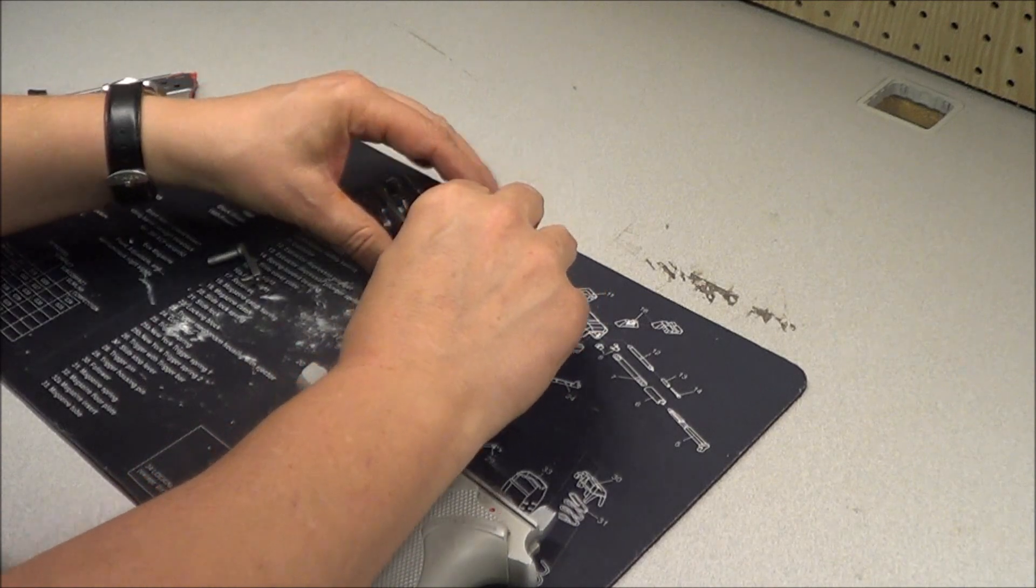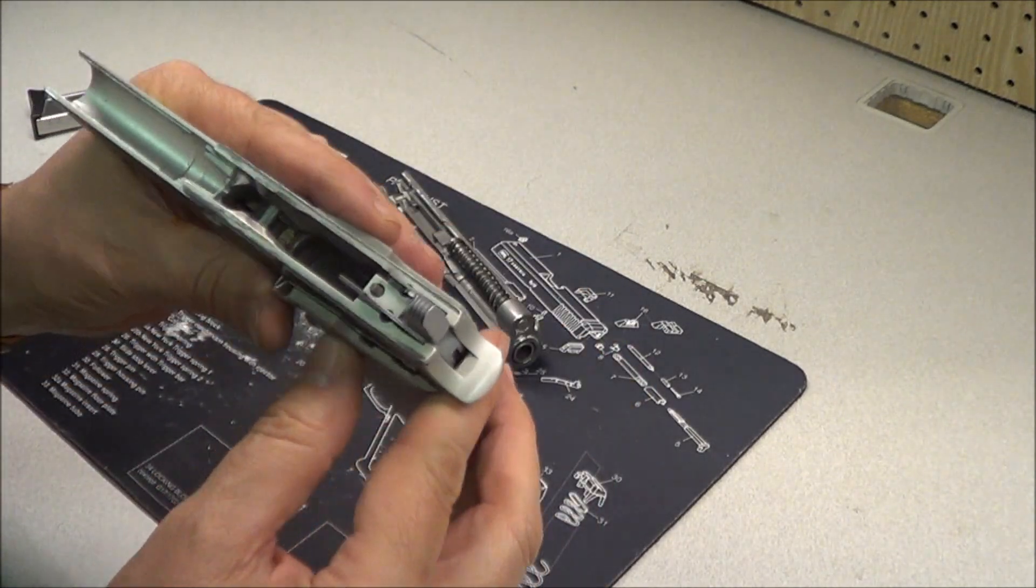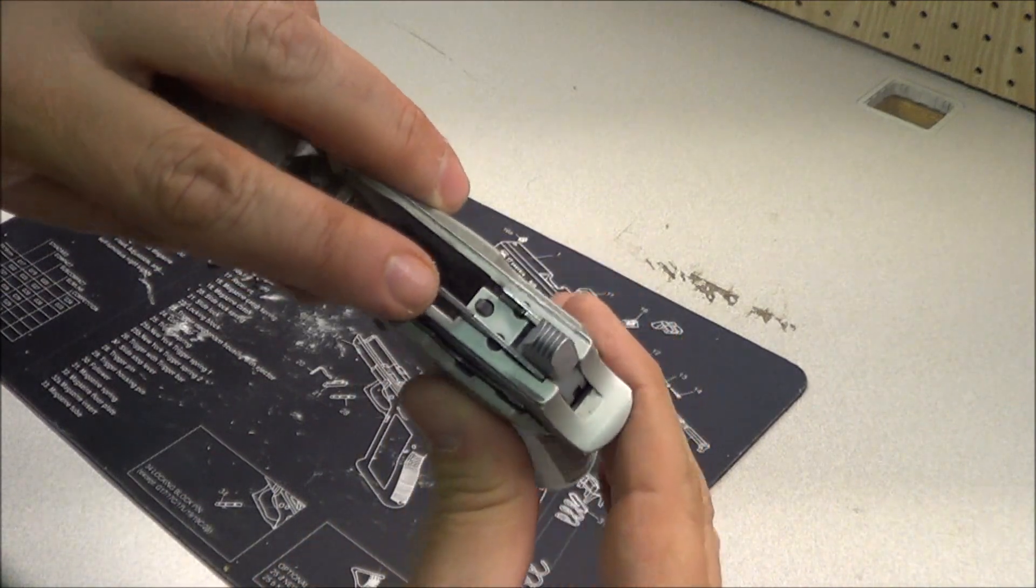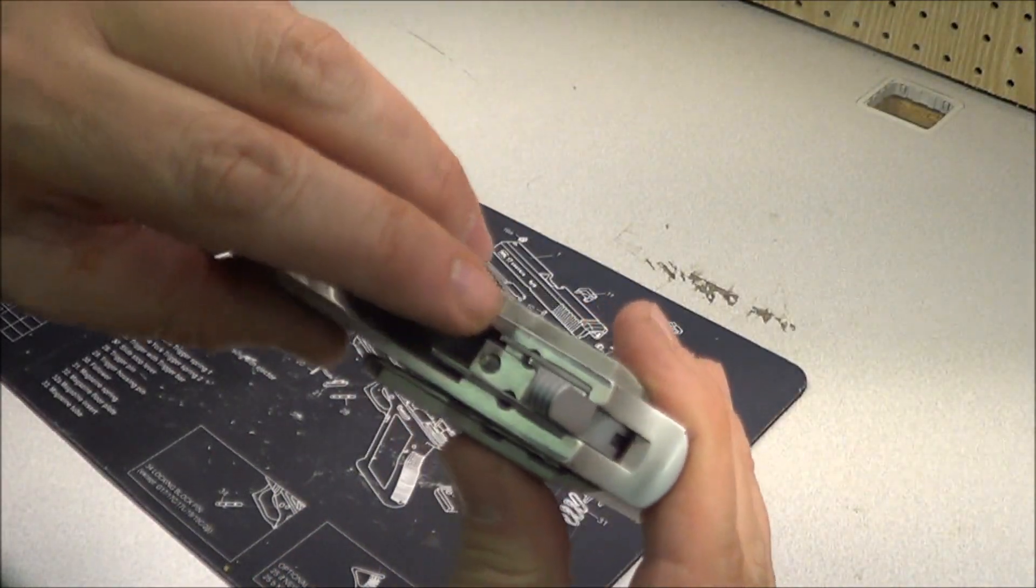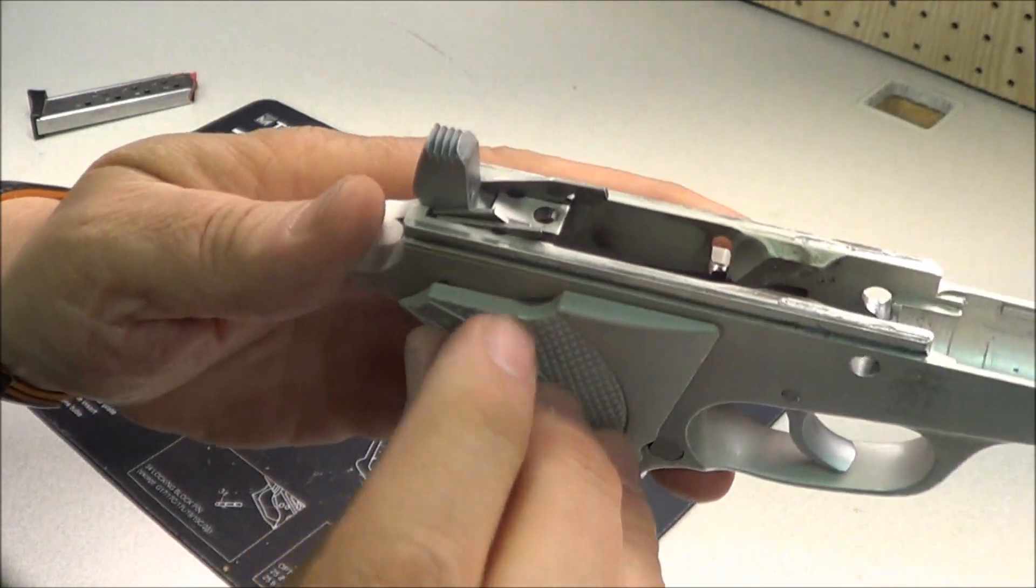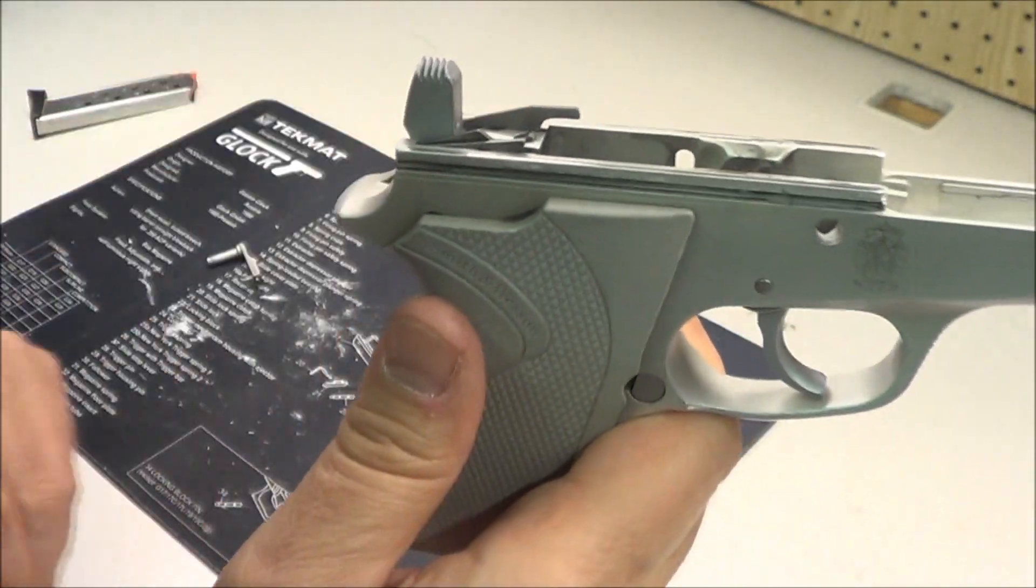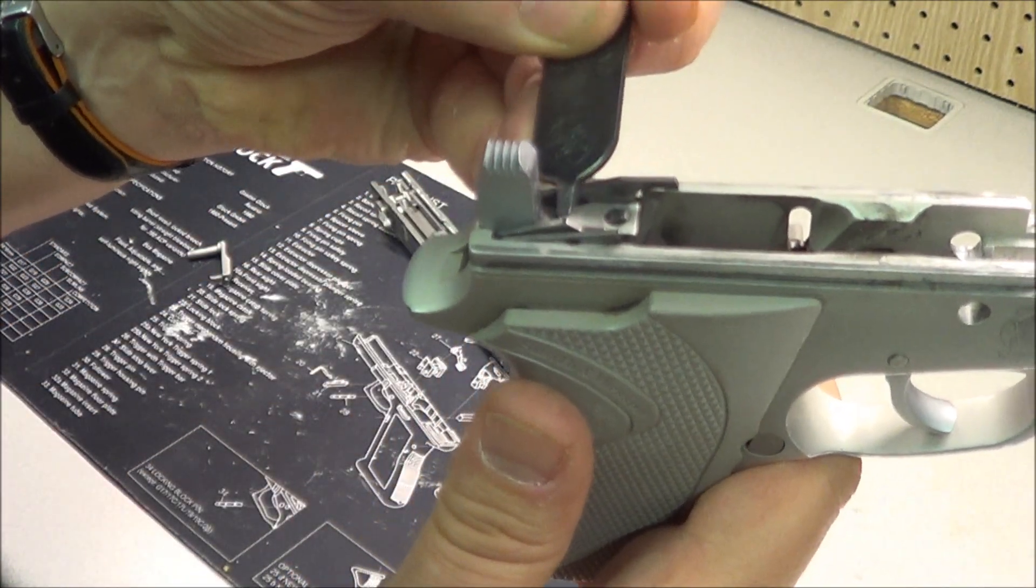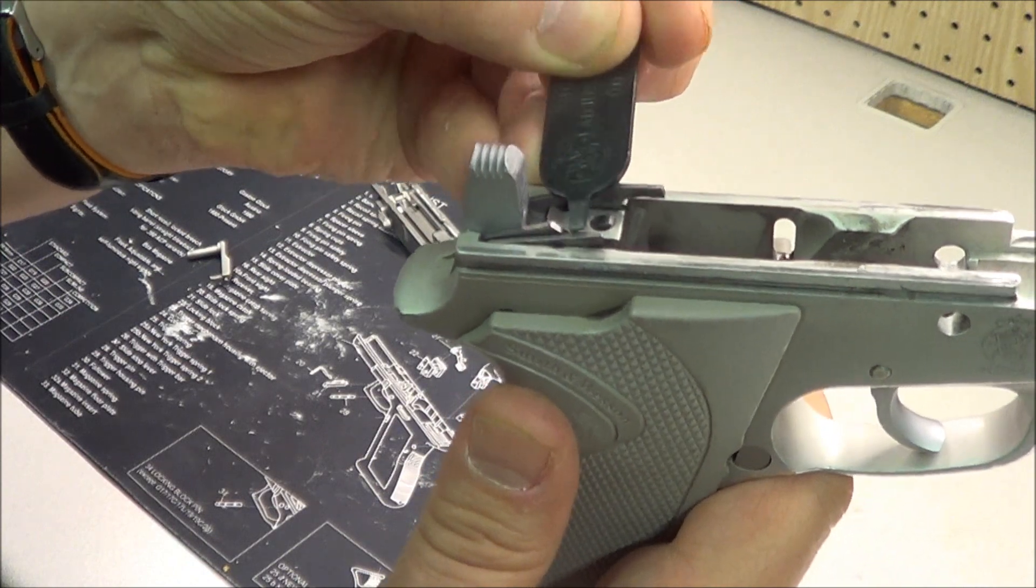And on the frame here, there's three little pieces right here. There's one right here, and then these two right here. Right there and there. One right there, one right here, and right there.